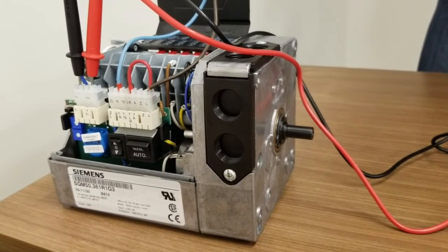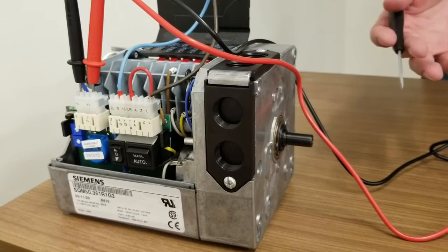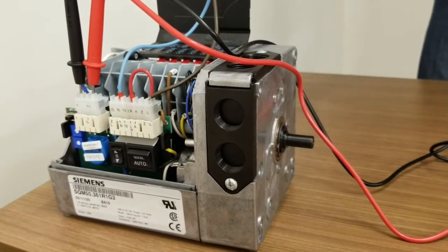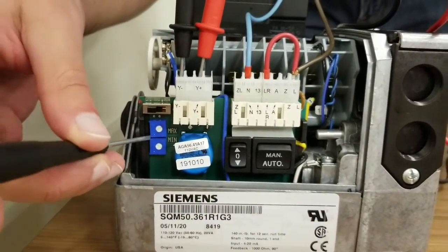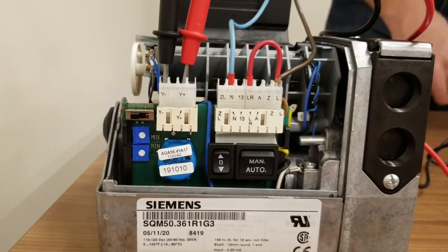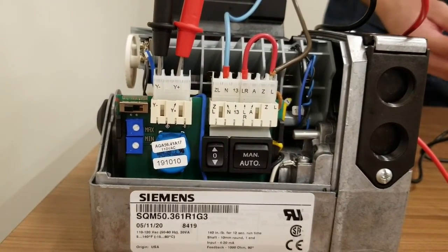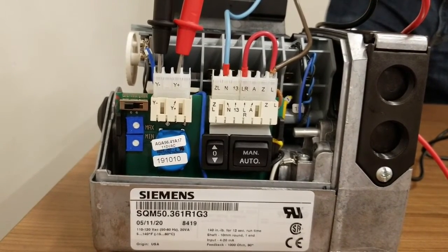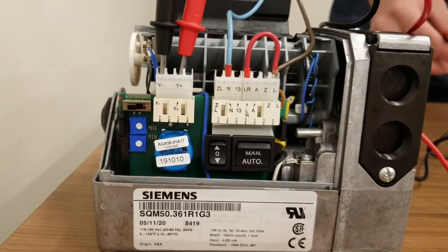Now that we've driven down to our low fire position, we want to ensure that we have a properly scaled input signal. We're going to use the same flathead screwdriver, and we're going to adjust the min potentiometer, the blue min potentiometer. This adjustment is going to ensure that we're utilizing the full range of the input signal. You're going to rotate the min potentiometer in a clockwise direction until the motor starts to drive slightly upwards.